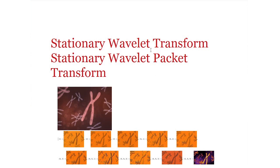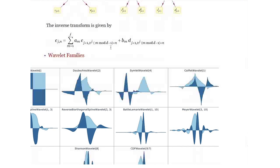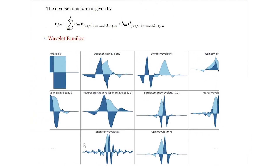Let us now switch gears and talk about stationary wavelet transform and stationary wavelet packet transform. The way it performs decomposition is virtually identical to discrete wavelet transforms — it takes a signal and decomposes it into coarse and detail coefficients, with the regular stationary transform further decomposing at level j+1. The packet transform also does the same operations on the detail coefficients. The formulas are slightly different from DWT in that there is a certain mod-dependence in the way convolution is performed. Wavelet families associated with stationary wavelet transform include Daubechies, Symlet, spline wavelets, and so on.